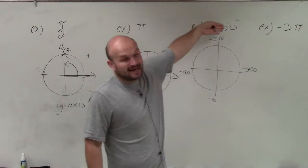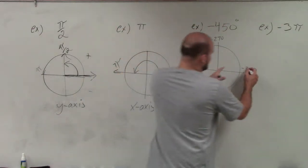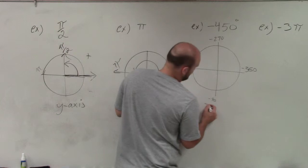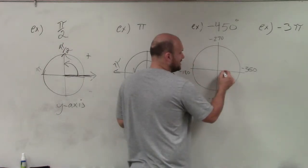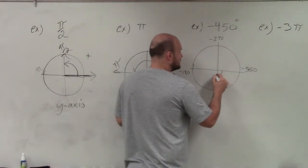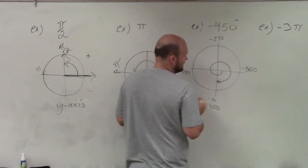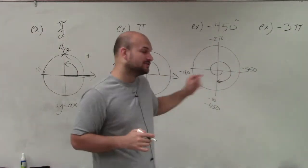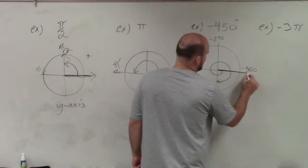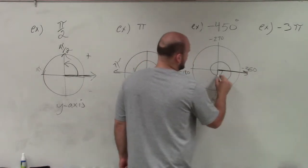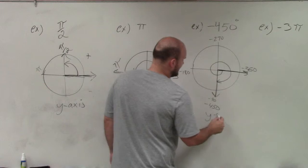I need to get to negative 450, so I need to go an extra 90 degrees down, which would be negative 450. So my angle is going to start here, go all the way around, and then come back to here. Where here is your initial side and here is my terminal side — it ends again on the y-axis.